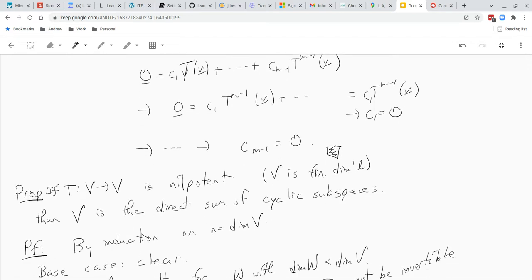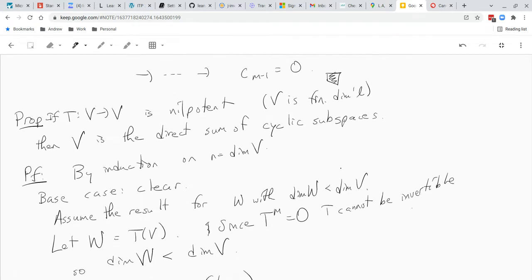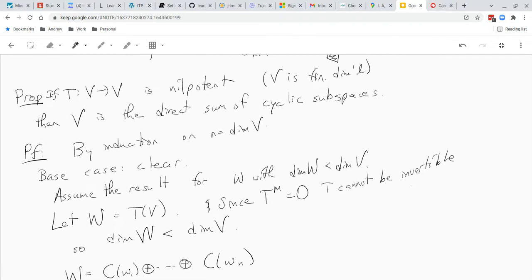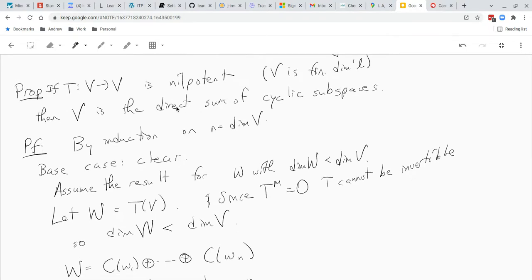Okay, so in the next video, I'll just give you a preview. We want to show that if we have a nilpotent linear operator on a finite dimensional vector space, then the vector space is the direct sum of cyclic subspaces. So let me stop the video here and then do this in a different one.